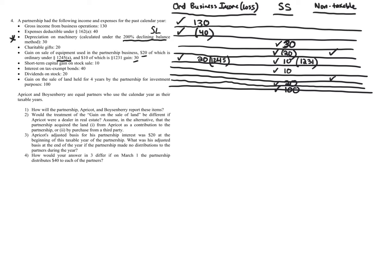We've gone through all the items for the partnership. On page one of Form 1065, we have Ordinary Business Income Loss. Lumping the ordinary items together gives us a total of $110. The separately stated and non-taxable items go separately on Schedule K and are not lumped together. So Form 1065 shows $110 of ordinary business income, with all separately stated and non-taxable items shown on Schedule K.